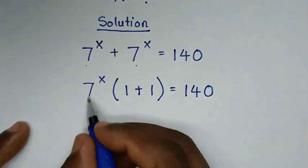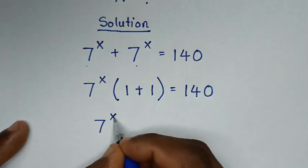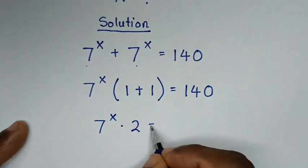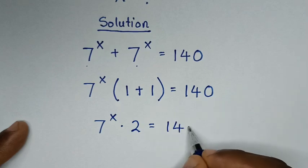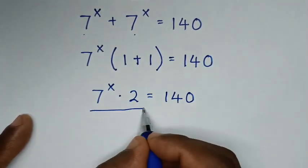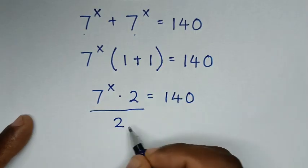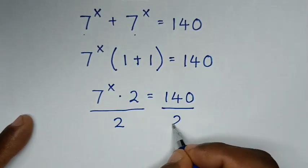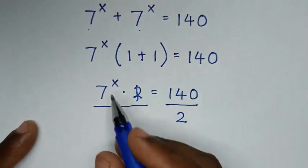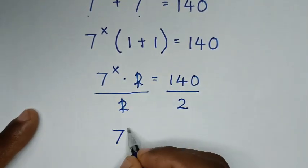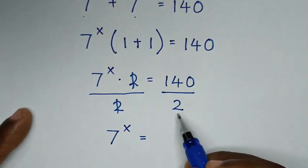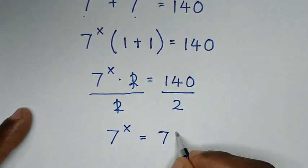Then it will be 7 power of x times 1 plus 1, which is 2, is equal to 140. We'll divide by 2 on both sides, and this will cancel. Then it will be 7 power of x is equal to 140 divided by 2, which is 70.